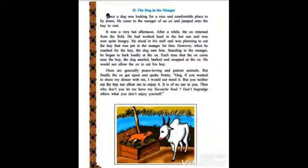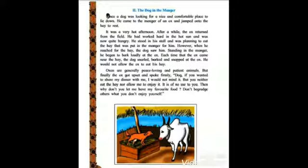It was a very hot afternoon. After a while, the ox returned from the field. He had worked hard in the hot sun and was now quite hungry. He stood in his stall and was planning to eat the hay that was put in the manger for him. However, when he reached for the hay, the dog saw him standing in the manger. He began to bark loudly at the ox. Each time that the ox came near the hay, the dog snarled, barked and snapped at the ox. He would not allow the ox to eat his hay.